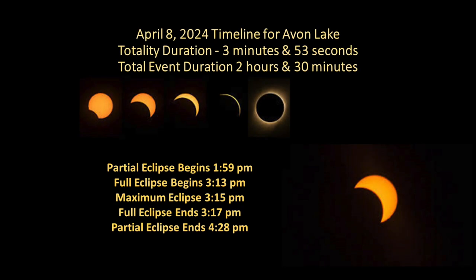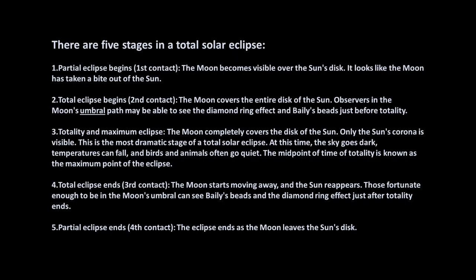Here's our timeline once again. The duration is 3 minutes and 53 seconds. The entire event will take two and a half hours, from first contact to last contact. It begins at 1:59 p.m., the full eclipse begins at 3:13, maximum eclipse occurs, and then the full eclipse ends at 3:17. It's really important to keep that timeline in mind because we always have to talk about safe solar viewing. The entire event ends at 4:28.